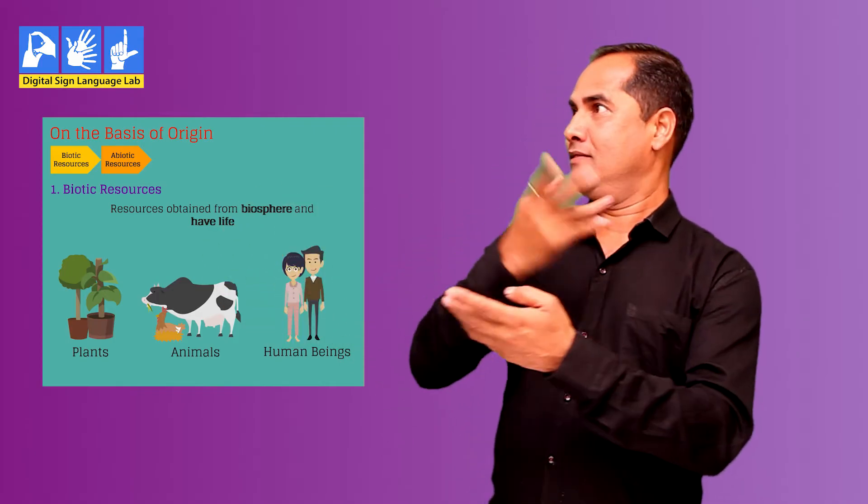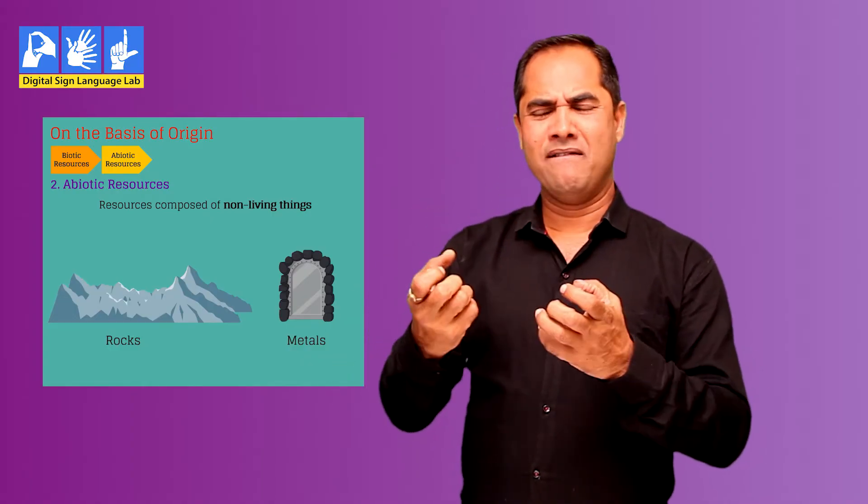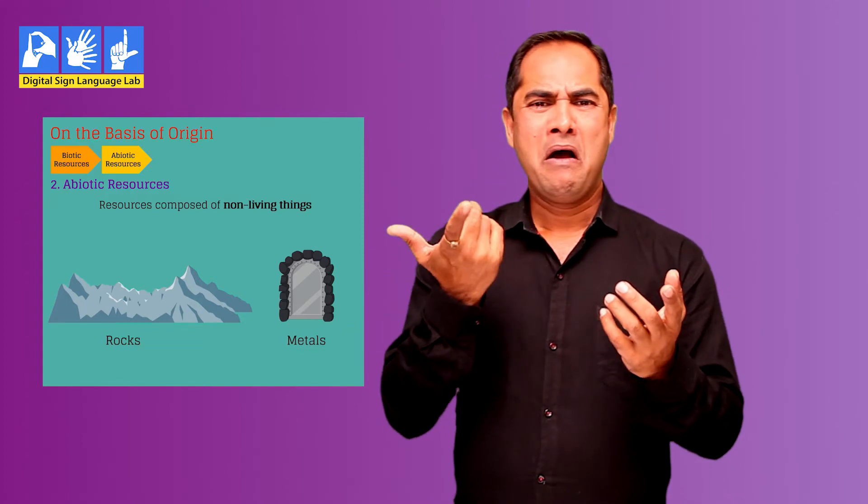We will first look at resources on the basis of origin. They can be classified into two groups: biotic resources or abiotic resources. 'Bio' means life — related to the biosphere, having life — such as human beings, birds, flora, fauna, fisheries, etc. The other group, abiotic resources, are all those things composed of non-living things such as mud, rocks, metals, etc. These are things which don't have life.